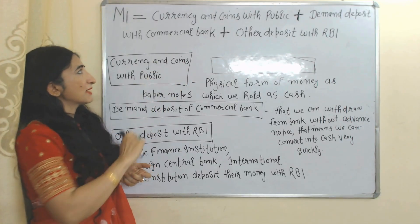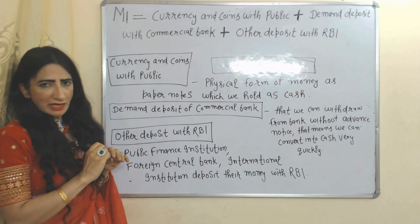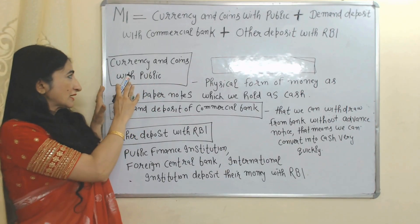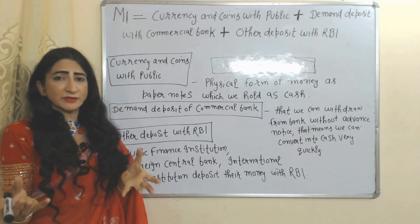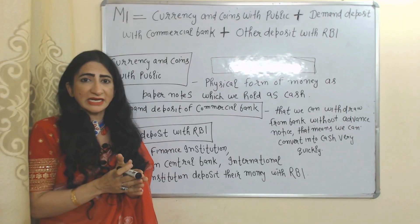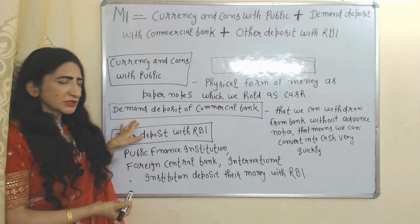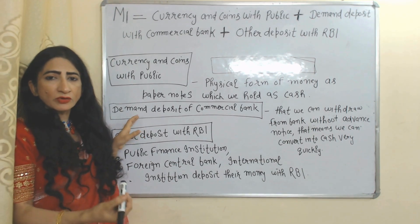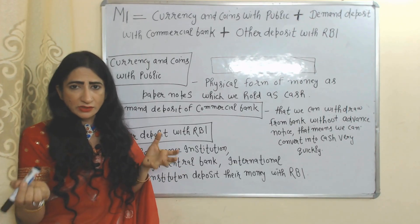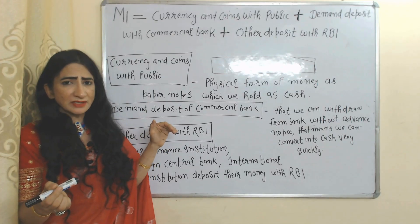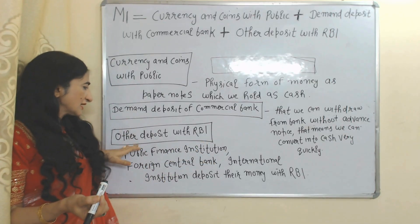M1 equals currency and coins with public, plus demand deposits with commercial banks, plus other deposits with RBI. Currency and coins with public means the physical form of money we hold as cash — for example, paper notes. Demand deposits of commercial banks allow us to withdraw money without giving any advance notice, meaning we can quickly convert them into cash.